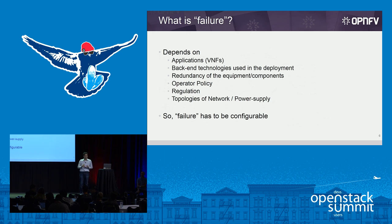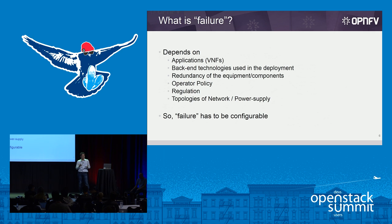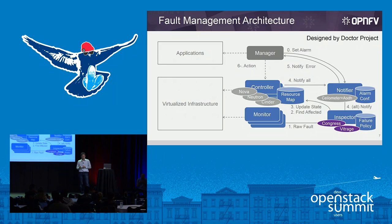The difficulty is how we can define the fault or failure — it really depends on the architecture, application, or backend technologies used in the infrastructure. Sometimes they have redundant NICs or hardware, so if one redundant NIC has problems, the system will still be alive because the backup is active. So it's very difficult to define the failure, and sometimes government regulations or operator policies mean failure must be configurable. This is one requirement we identified.